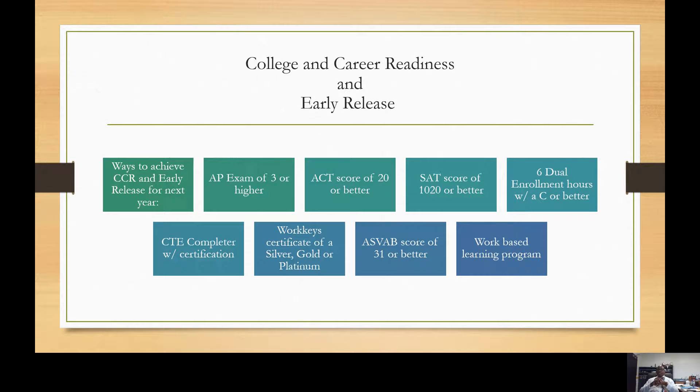This can be, when you talk about six dual enrollment hours, for a college, three is usually one course. So if you take two courses and get a C or better in both, that counts as well. A CTE completed with certification. It could be a marketing pathway, welding, something at the career center. Then the work key certificate with a silver, gold, or platinum. ASVAB score of 31 or better for a Work-Based Learning Program.